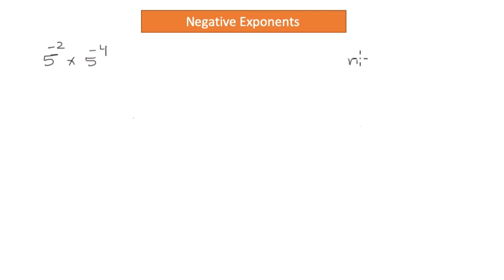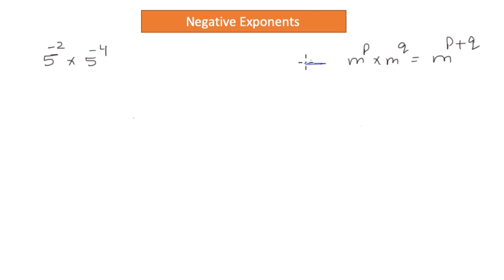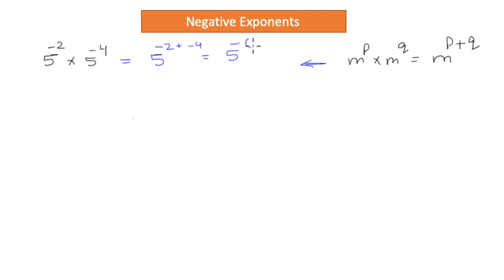I would like to state the first rule of exponents: m to the power p times m to the power q is equal to m to the power p plus q. I am going to apply this rule here as well. This expression has the same base with two different negative powers, so this is the same thing as 5 to the power negative 2 plus negative 4, which will be 5 to the power negative 6.